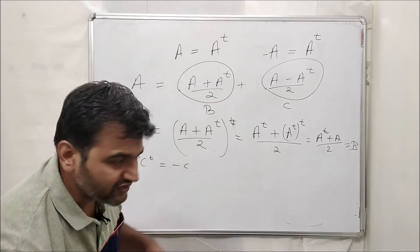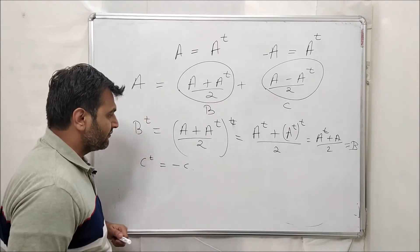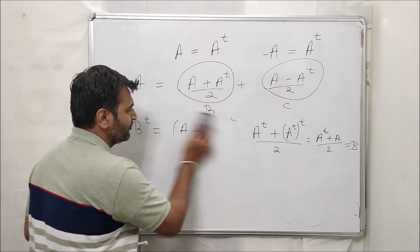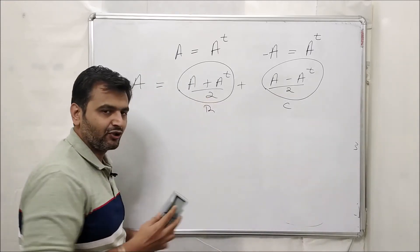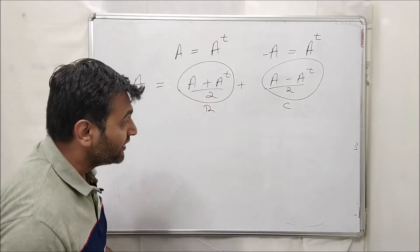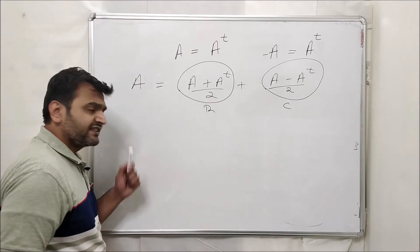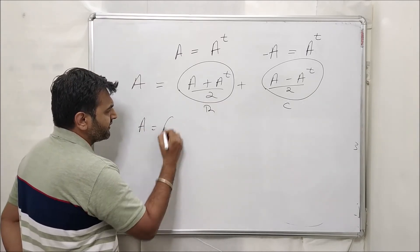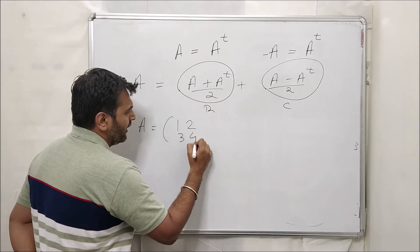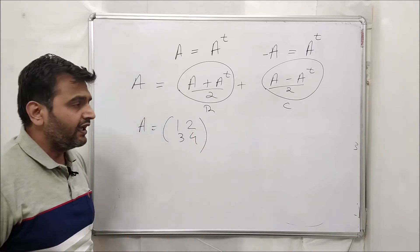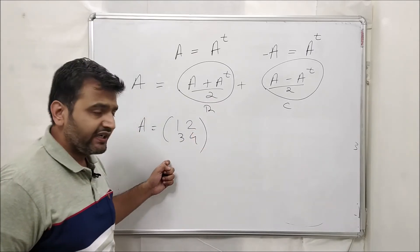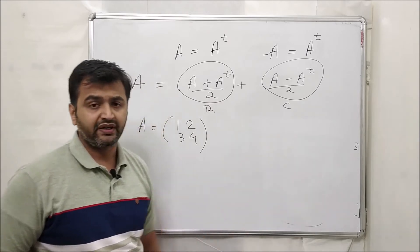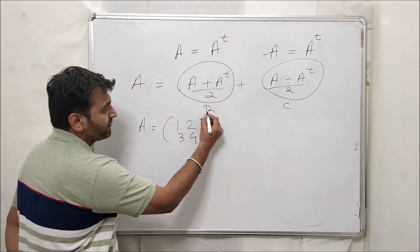This was the theoretical part, but let's see an example. Suppose I give you the matrix A equals [1, 2; 3, 4]. The question is: write this matrix as a sum of a symmetric and skew-symmetric matrix. The symmetric part B is (A plus A transpose) over 2.